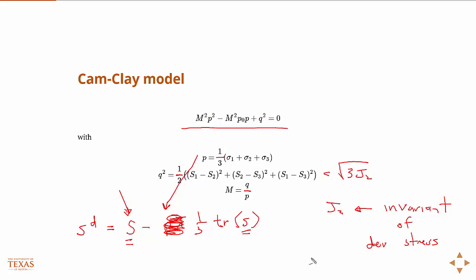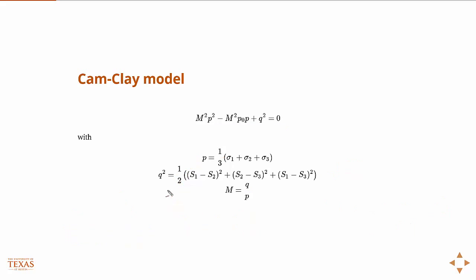So, J2 is then the second invariant of this guy, and if you work it out in terms of the principal stresses, then it's just this, where I've squared the left-hand side to get rid of the square root. But, anyway, and then m is the slope q over p.